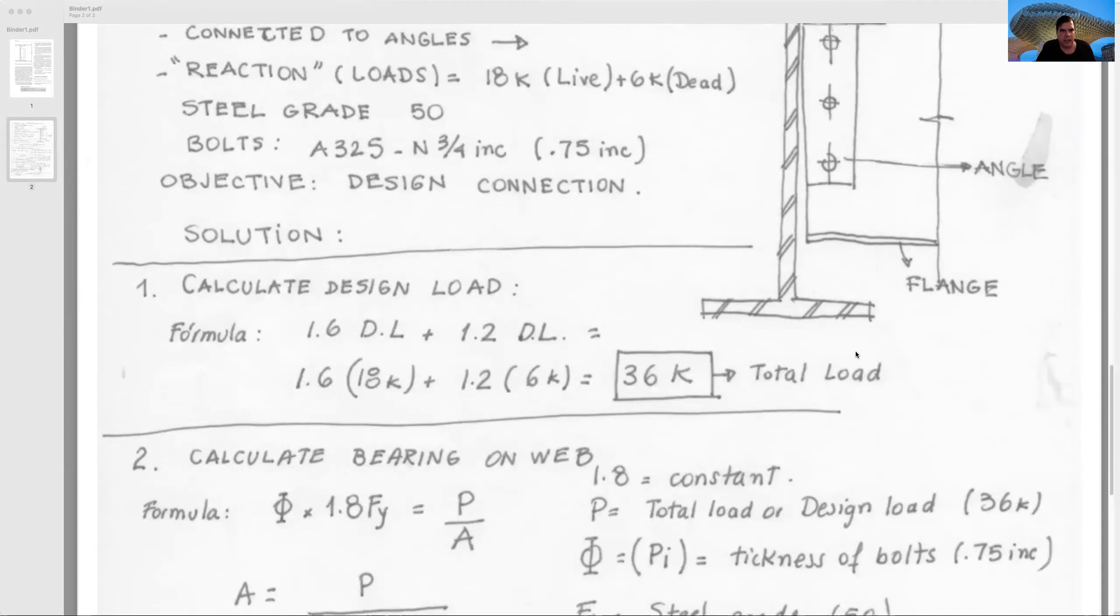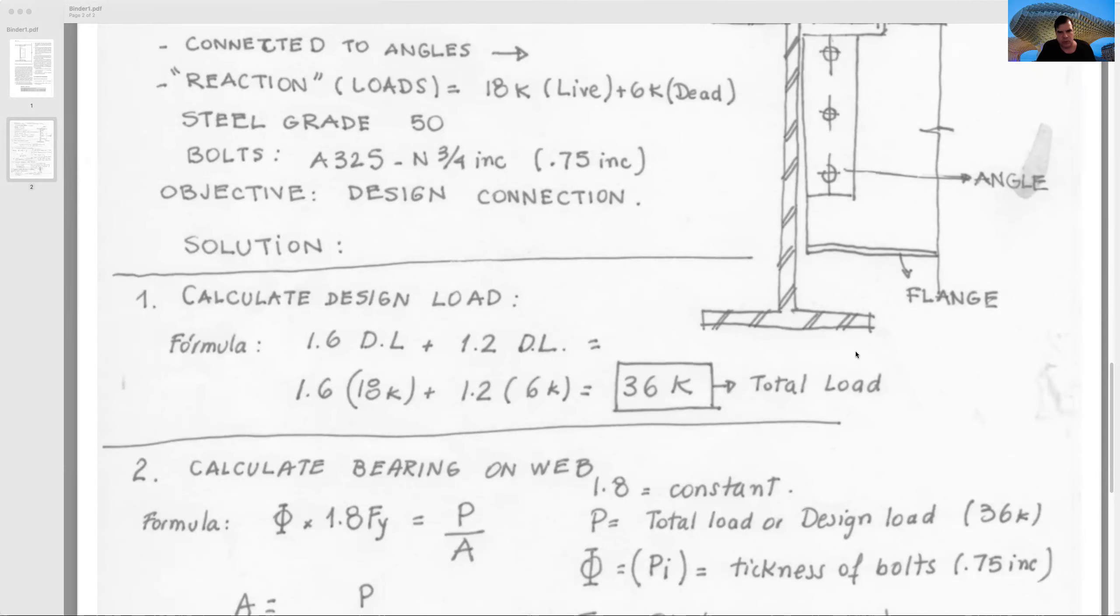First we need to calculate the design load. The design load is the total load that is supported: 18 plus 6. But we will not put 18 plus 6 together; we need to exaggerate those numbers with a security factor. Be careful about this formula. The live load is 1.6 times 18, and the dead load is 1.2 times 6. We multiply 1.6 by 18 and 1.2 by 6, and we have a total load of 36K.